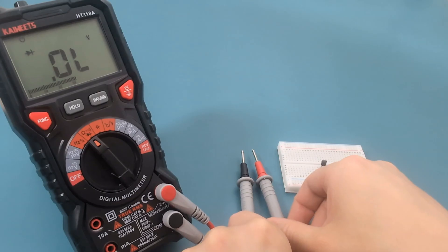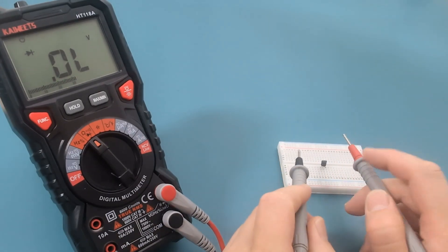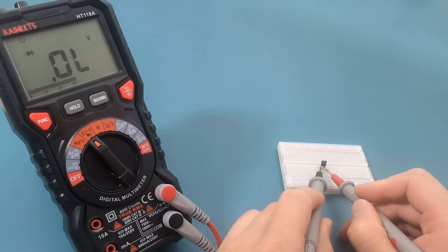Let's test another transistor. Touch the black probe to the first wire and the red probe to the second wire. The voltage drop is around 637 millivolts. Touch the black probe to the first wire and the red probe to the third wire.